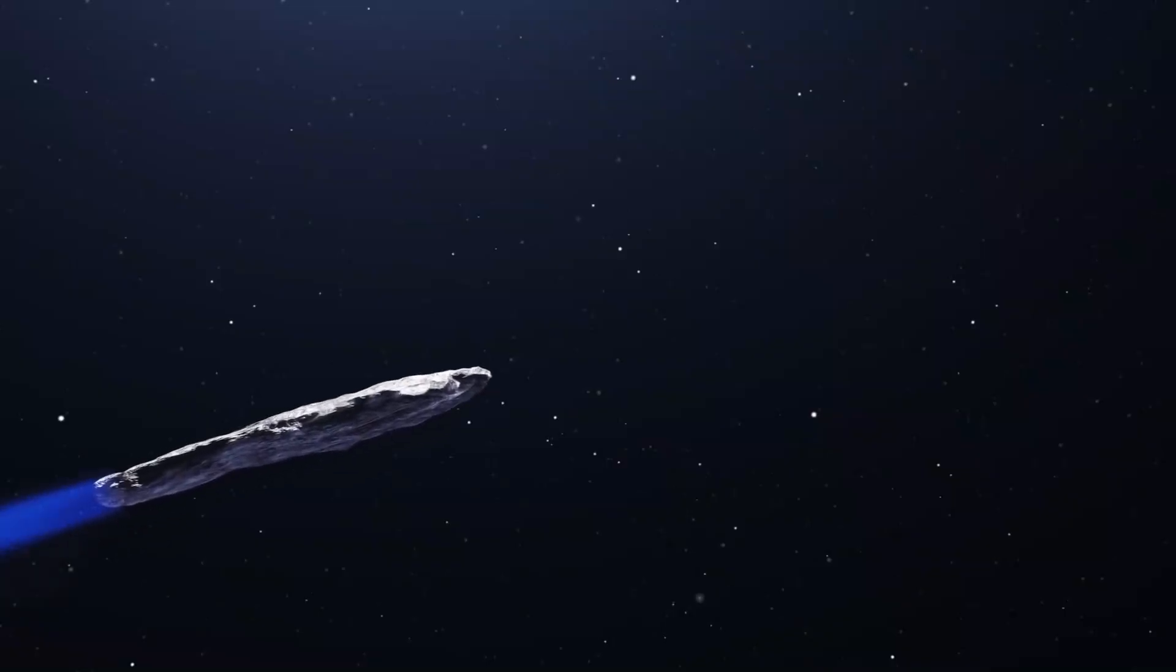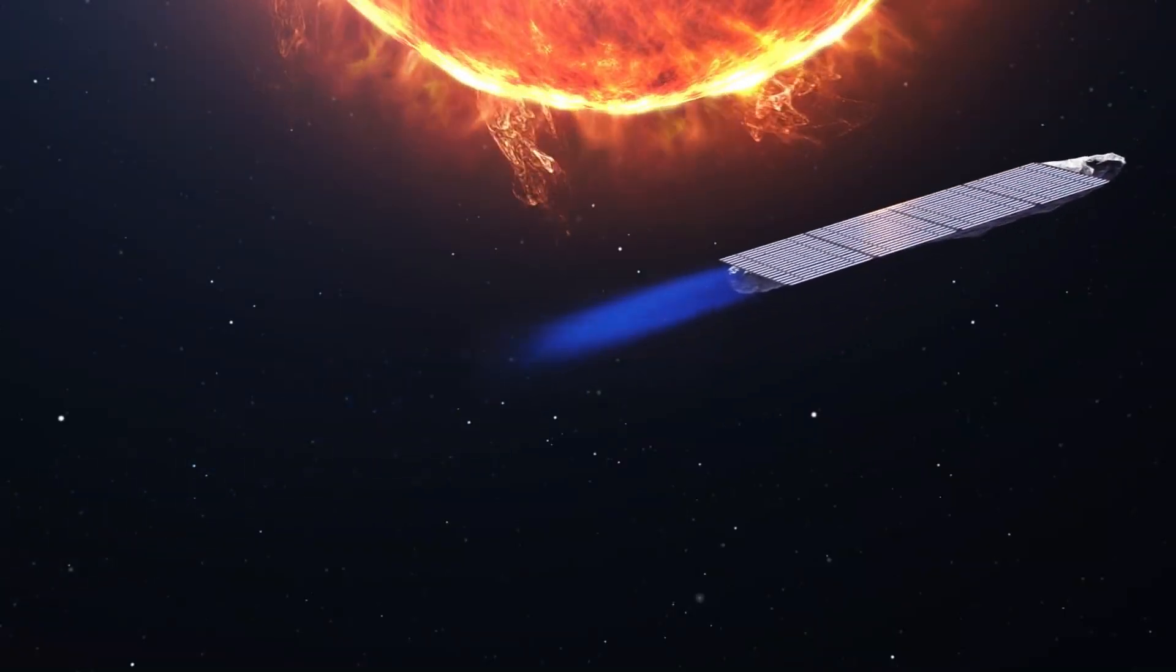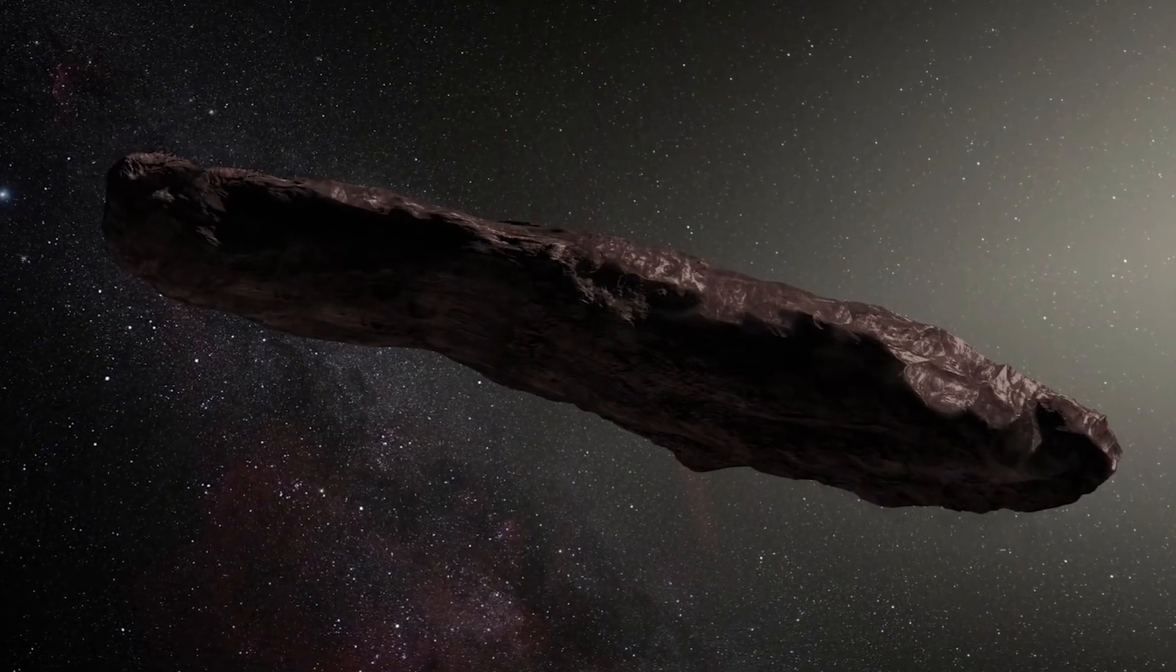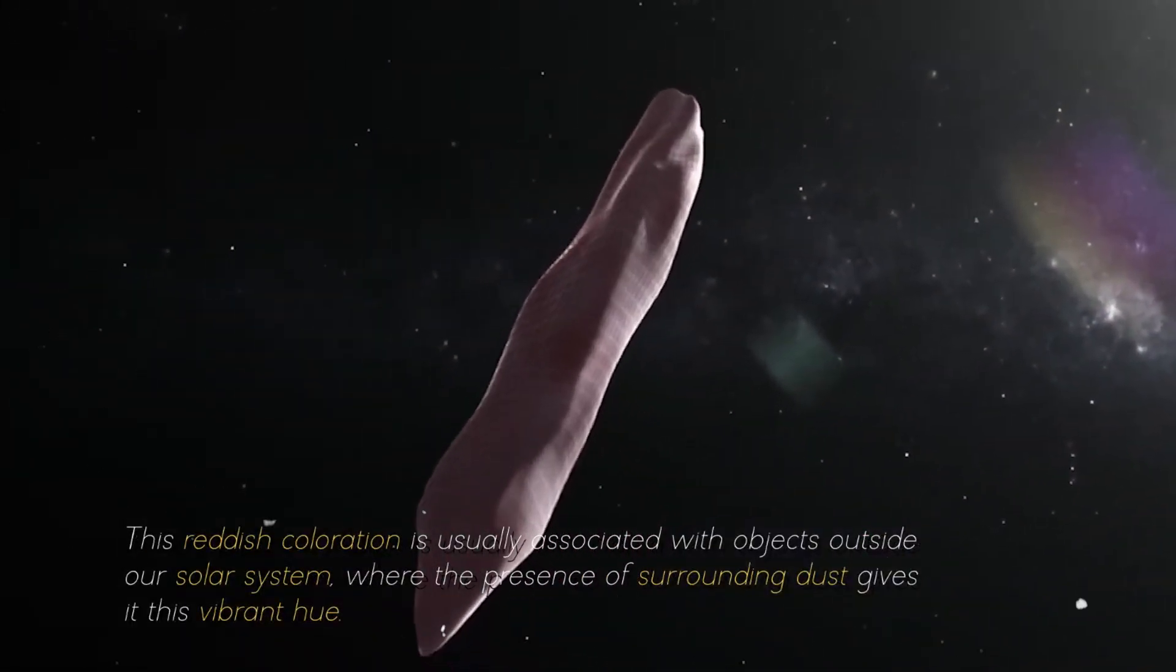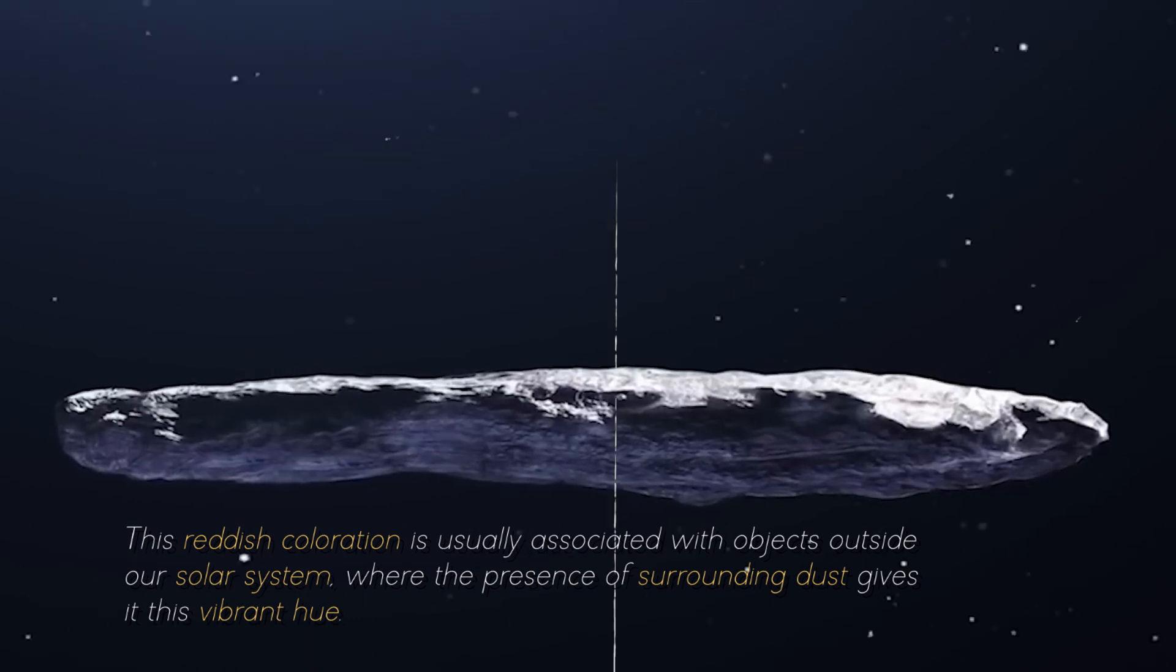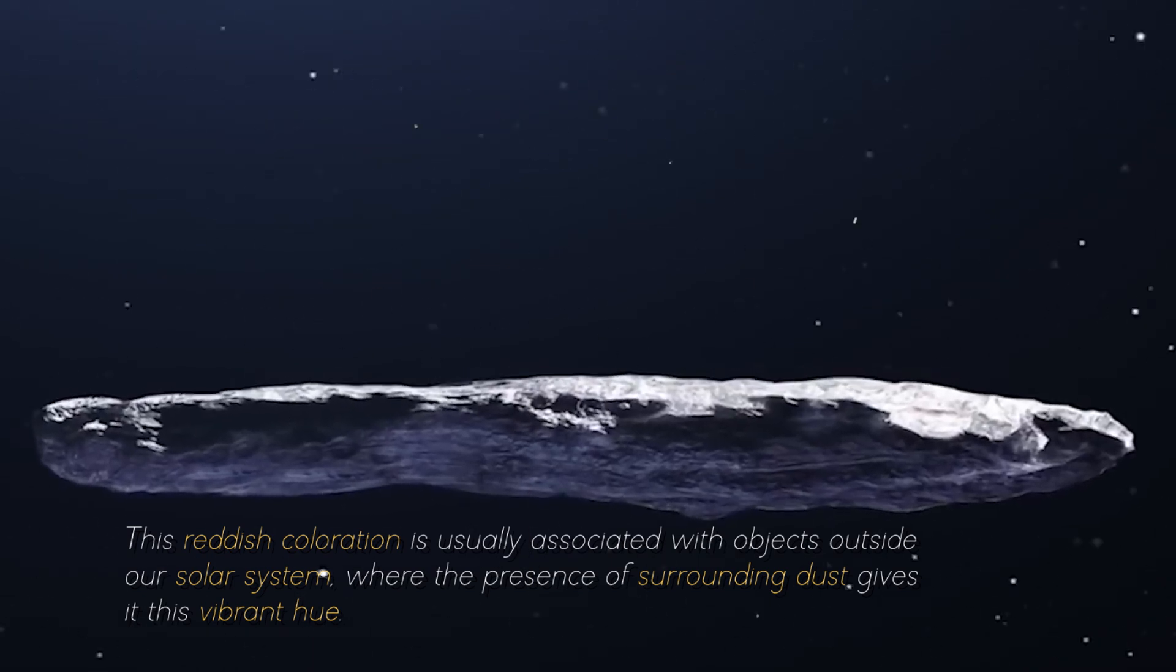As if Oumuamua's peculiar shape and massive size were not puzzling enough, it also revealed another striking feature, a distinctive reddish hue. This reddish coloration is usually associated with objects outside our solar system, where the presence of surrounding dust gives it this vibrant hue.